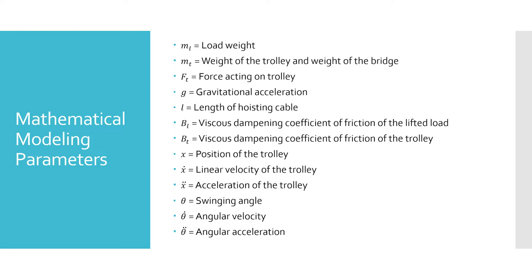BT is the viscous dampening coefficient of friction of the trolley, X is the position of the trolley, X dot is the linear velocity of the trolley, X double dot is the acceleration of the trolley, Theta is the swinging angle, Theta dot is the angular velocity, and Theta double dot is the angular acceleration.